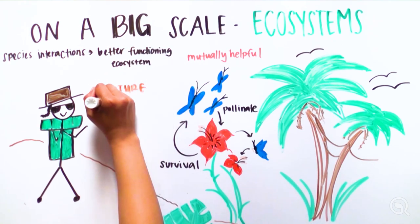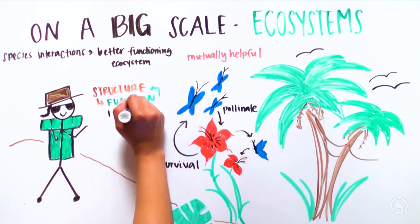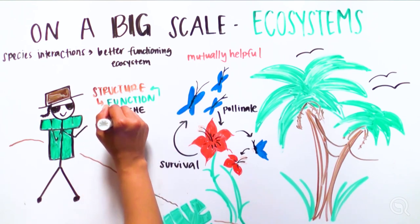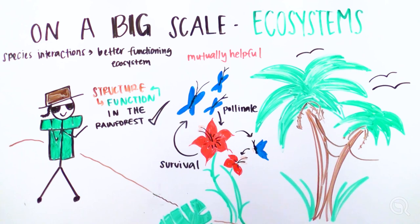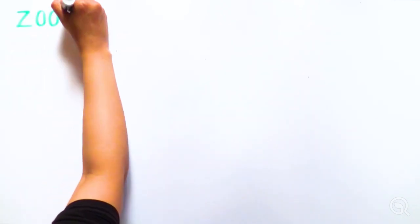Species interactions are part of the rainforest structure, and they help the ecosystem function in important processes such as pollination and survival. Structure determines function in an ecosystem like the rainforest.